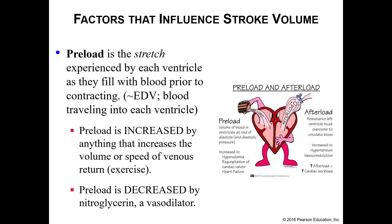Our first factor that influences stroke volume is preload. Preload is basically how much each ventricle stretches as it fills with blood prior to contraction — approximately your end diastolic volume, as that's how much blood we put in the ventricles. Think about this like filling a balloon with water: as you put water in the balloon, the balloon stretches. Similarly, as you put blood in your ventricles, your ventricles stretch.